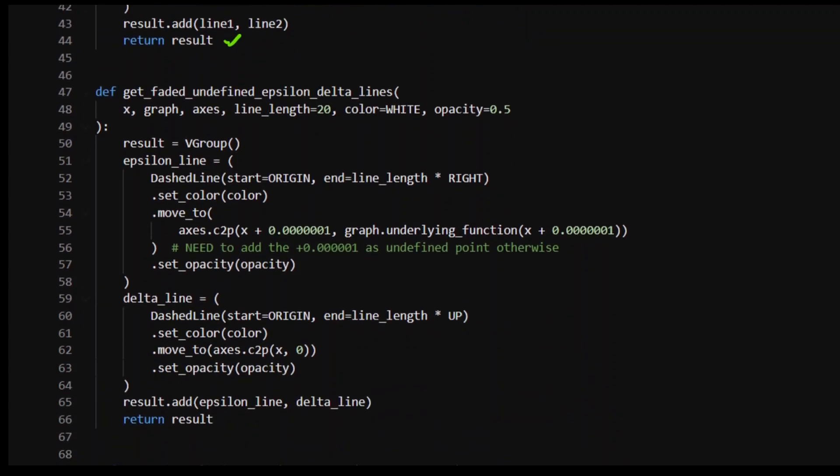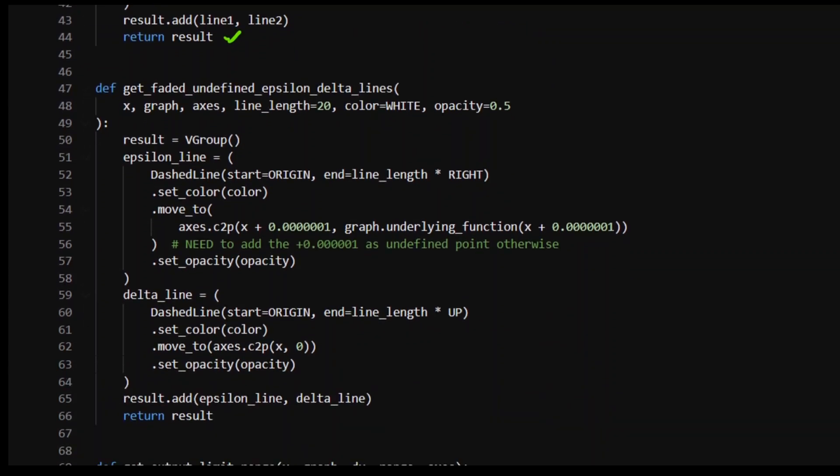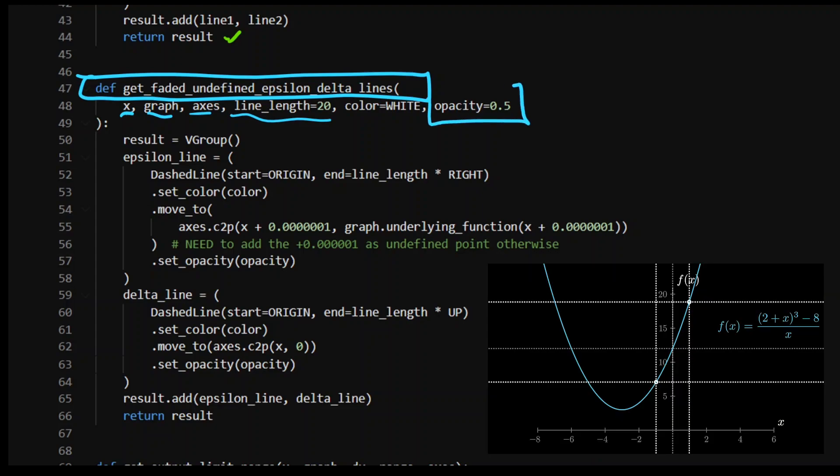And then I want to give the effect of the faded lines that are kind of sitting there in the background as if, like, this is the point where the limit does not exist. And I can do that. I can just create. I get faded lines where it takes an x, a graph, an axis, the line length, and so on and so on. But I set the opacity of this one to 0.5.